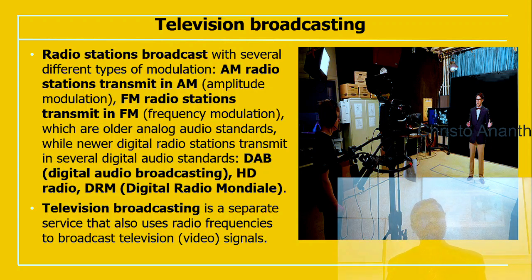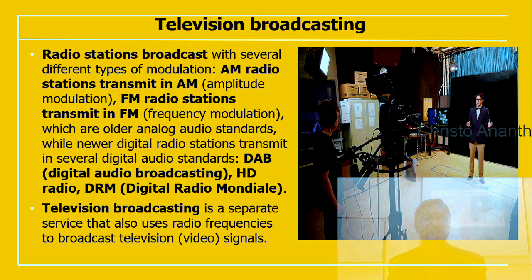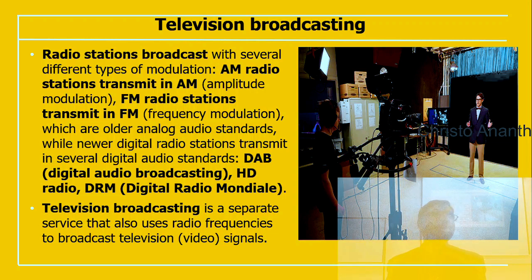There are different types of modulation. AM radio stations transmit in amplitude modulation, and FM radio stations transmit in frequency modulation — these are older analog audio standards. Newer digital radio stations transmit in several digital audio standards, for example DAB (Digital Audio Broadcasting), HD Radio (similar to HDTV), and DRM.